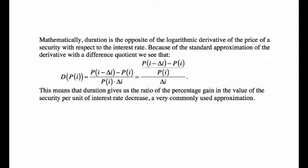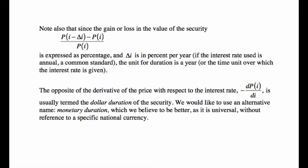For example, if a security has a duration of 5 years and the interest rate declines from 3% to 2% — a decline of 1% — then [P(i − Δi) − P(i)] / P(i) equals 5%. Duration of 5 means that if the interest rate declines by 1%, you have a gain in the value of the security of 5 times 1% change, which is 5%. Note that duration is in years because the gain is a percentage and Δi is percent per year.